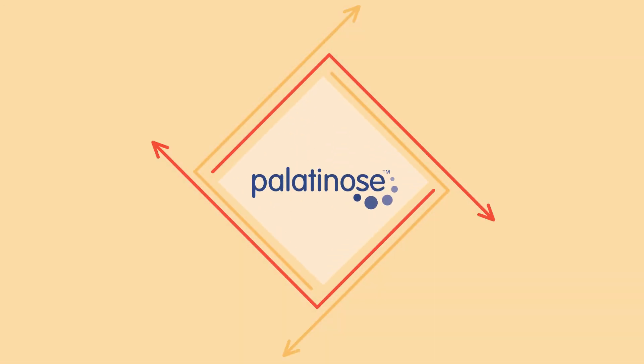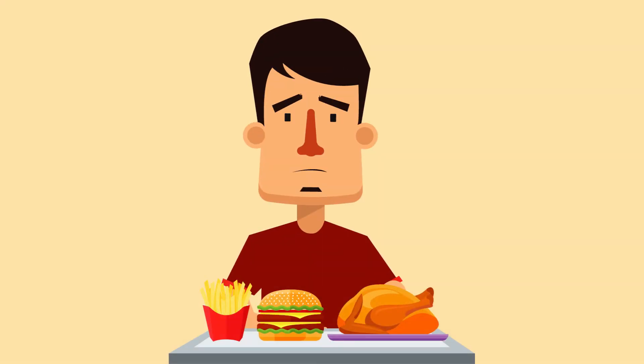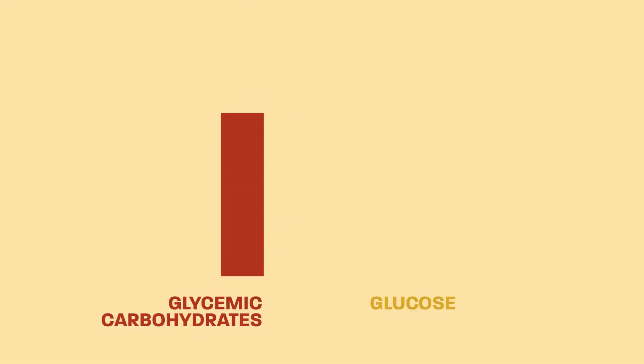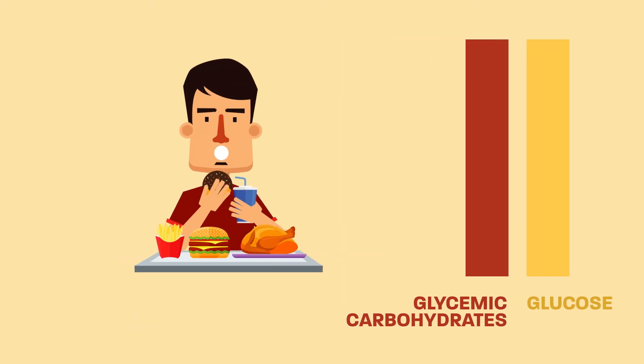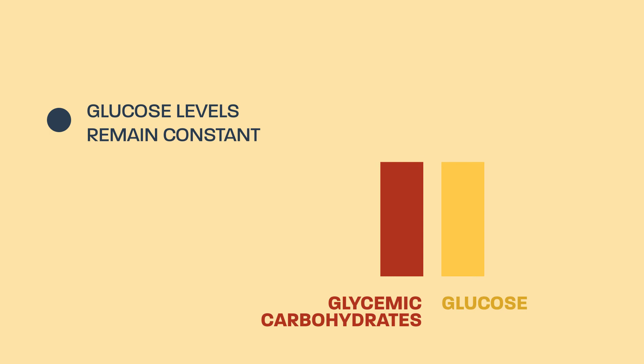Mycelin also has Palatinose, a low glycemic carbohydrate that helps suppress the appetite. High glycemic carbohydrates shift our glucose levels at a rapid rate, and this causes the feeling of hunger. Since Palatinose takes more time to absorb, our glucose levels remain constant at a more balanced rate, so we feel full longer.